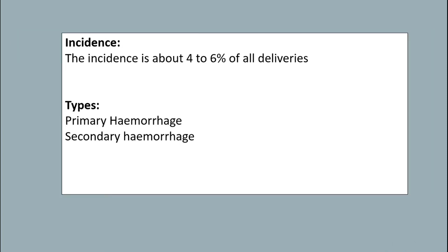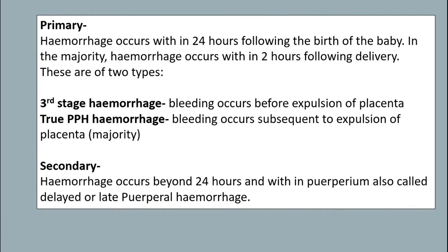The incidence is about 4 to 6 percent of all deliveries. Types include primary hemorrhage and secondary hemorrhage. Primary hemorrhage occurs within 24 hours following the birth of the baby, and in the majority hemorrhage occurs within two hours following delivery. These are also of two types: third stage hemorrhage where bleeding occurs before expulsion of placenta, and true postpartum hemorrhage where bleeding occurs subsequent to expulsion of placenta, which is the majority of cases.